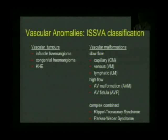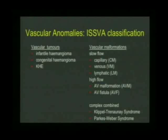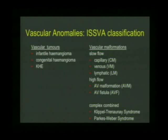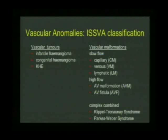Vascular tumors are true tumors. They are hypervascular, and some have vascular shunts within them, but they are quite different to vascular malformations. Vascular malformations are due to errors in vascular morphogenesis — errors in the development of vascular channels occurring at about the fourth week of intrauterine life. A simple classification of vascular malformations divides them by which vascular channel is abnormal: capillary, venous, lymphatic, or arterial.